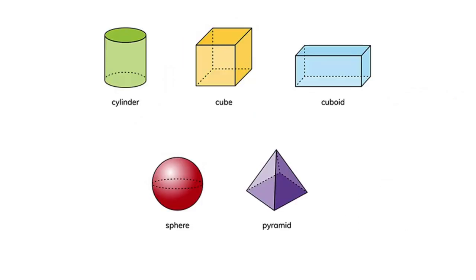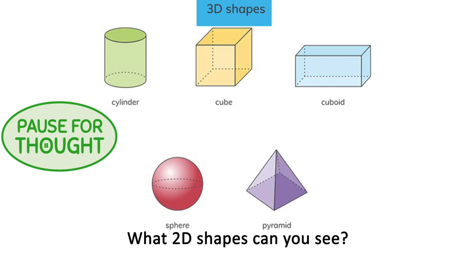The outside parts of 3D shapes are made up of 2D shapes. They are called faces. What 2D shapes can you see?